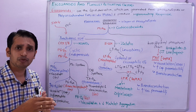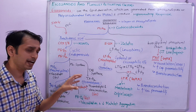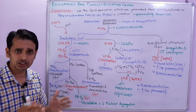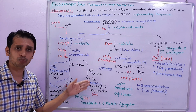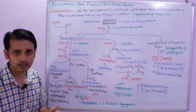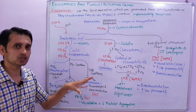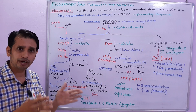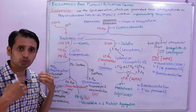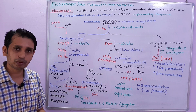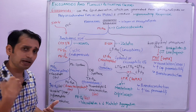TXA2 is also called bad for the heart. TXA2 is thromboxane, which causes vasoconstriction and acts via GQ-PCR, and this produces bad effects like heart problems.